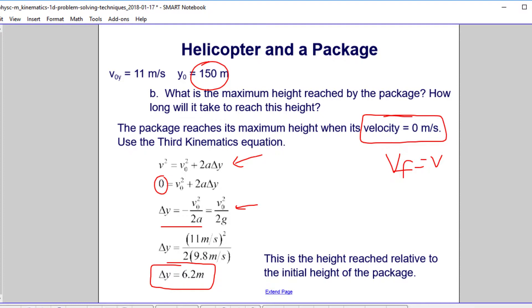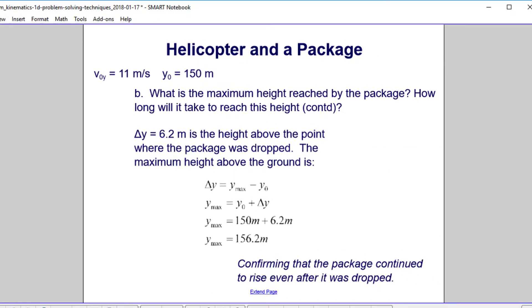So it goes up another 6.2 meters. What would be the height above ground at that point? It would be 6.2 plus 150. We found a delta y, not its absolute value above the ground. Reinforcing what we said, we found the height above the point where the package was dropped. That sounds funny, right? You dropped it, but we're talking about the height. But that is what happened because it had that initial velocity from the helicopter. So delta y is our y max minus where we started. We go ahead and move it around till we find y max. Our initial y was 150, we went up 6.2 meters. So the maximum height the package reached was 156.2 meters above the ground.